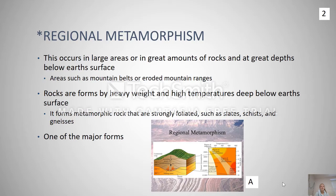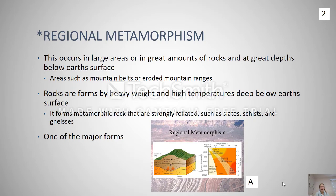The first type we're going to talk about is regional metamorphism. It occurs over very large areas and builds mountains. Rocks are formed by heavy weight and temperatures deep below the earth's surface. Regional metamorphism is when large regions of crustal rock are subjected to high temperatures and pressure, which changes the texture and materials of the rock. The high pressure and temperature bends and breaks the rock, creating a mountain and producing extensive areas of metamorphic rock. This is associated with large-scale plate tectonics. An example might be the Appalachian Mountains.